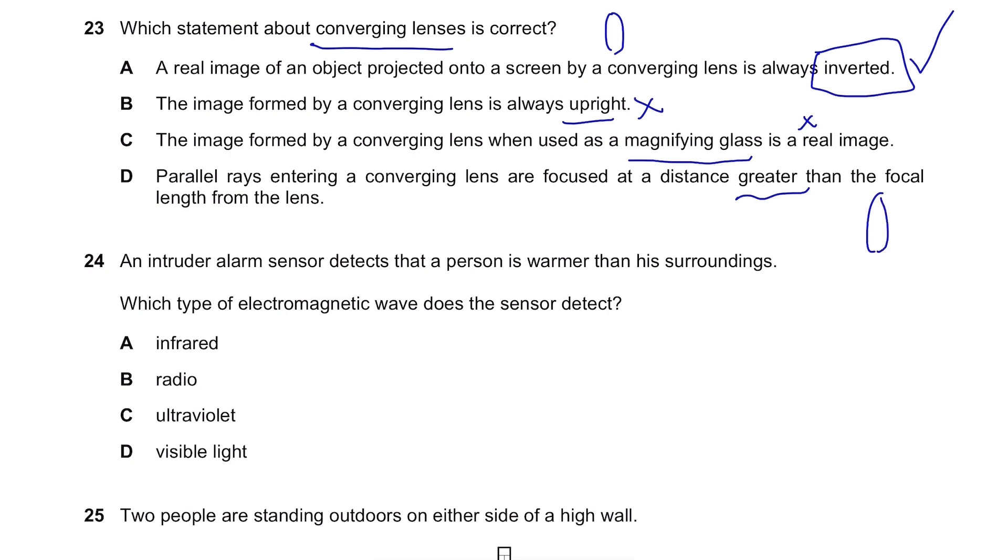Parallel rays entering a converging lens are focused at a distance greater than the focal length from the lens. This is also not the correct answer. They are focused at a distance shorter than the focal length. So let's say this is the lens and this is the focal length. Then the parallel rays entering should be somewhere over here between the focal length and the converging lens itself. So nope. Our answer is A.